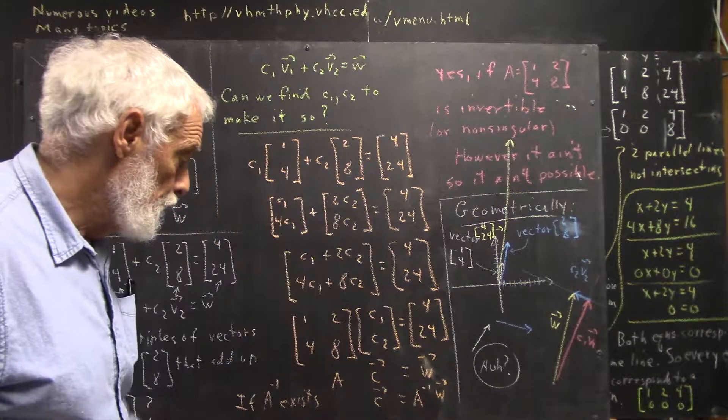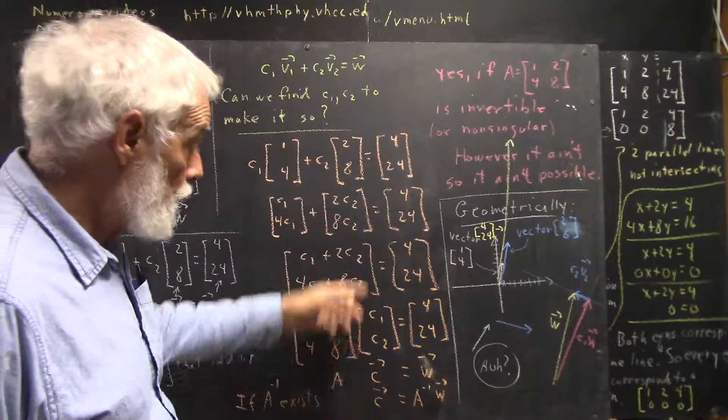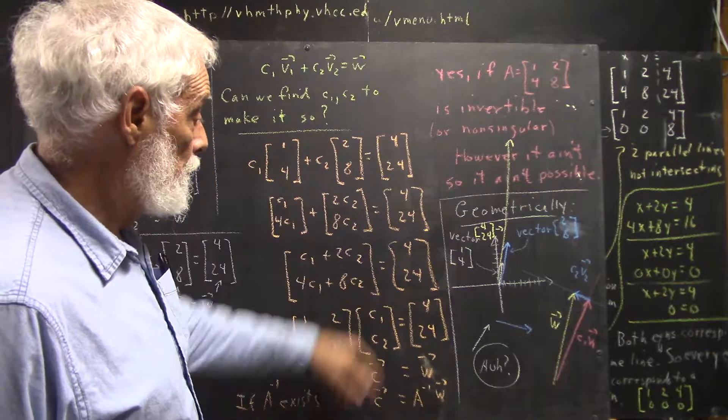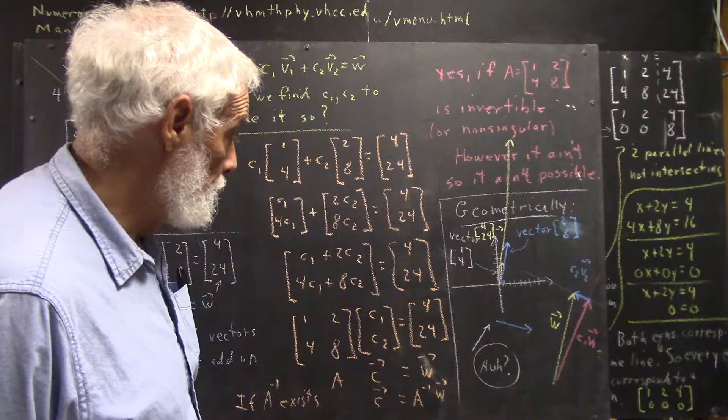Then this can be written as the matrix equation [1,2; 4,8] times the vector [c1, c2] equals the vector [4, 24]. This is of the form A*c equals w, just like an Ax equals b, so that c equals A inverse times w, again with the caveat if A inverse exists.